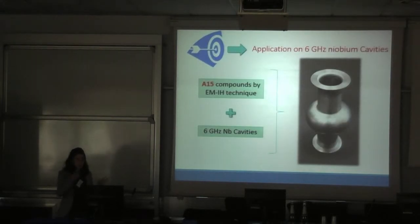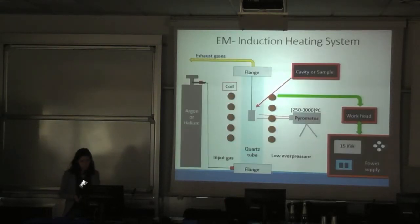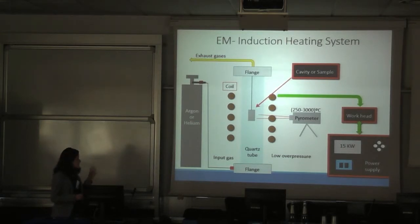Our real goal, after all the preliminary studies, is to apply or precipitate this A15 superconductor phase on 6-gigahertz gallium cavities. This is the sketch of our induction heating system. We have a quartz tube where we place the sample, or in the future the cavity is centered in a coil, where we induce a current, and this heats the sample. We control the temperature changing the voltage and time with the power supply. All the system is an inert environment using argon or helium gas.